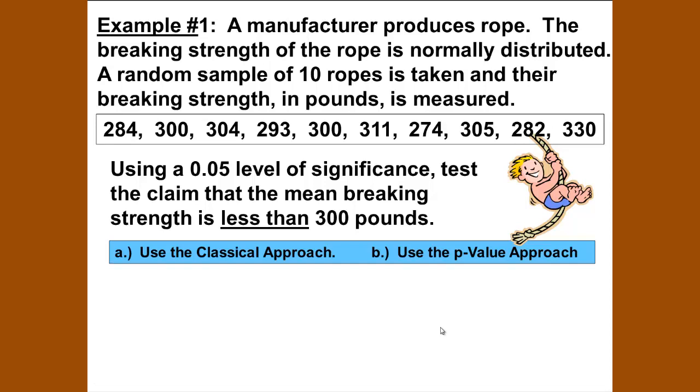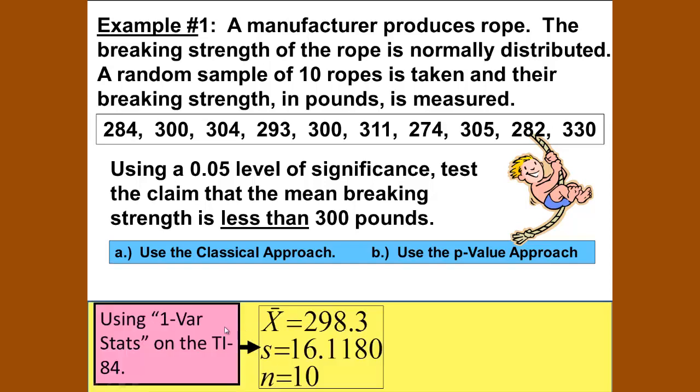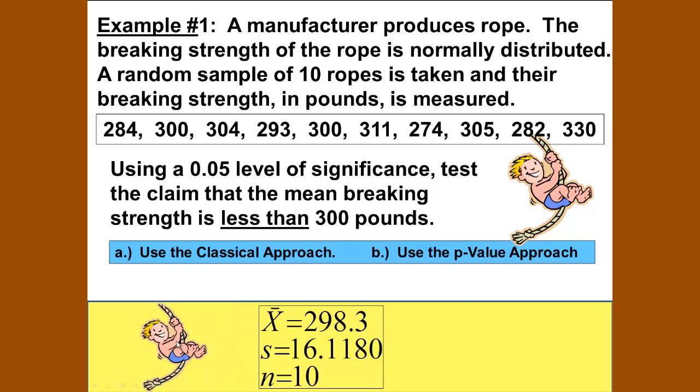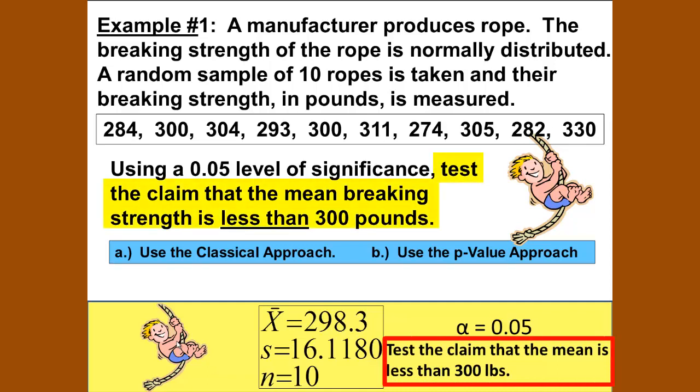Using a 0.05 level of significance, test the claim that the mean breaking strength is less than 300 pounds, and we will use both the classical approach and the p-value approach. Using 1-var stats on the TI-84 calculator, you will type in your data and find that the sample mean x̄ = 298.3, the sample standard deviation s = 16.1180, and n = 10. Our alpha, the significance level, is 0.05, and we're testing the claim that the mean is less than 300 pounds.